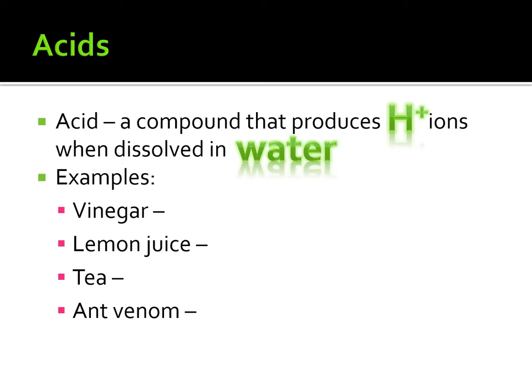Now what exactly does that mean? Let's illustrate this with a common example. A really common acid that many of you have heard of is hydrochloric acid. Hydrochloric acid is found in your stomach — it's an acid your body uses to dissolve or break down the foods you consume. The formula for hydrochloric acid is HCl.